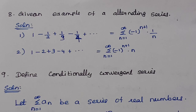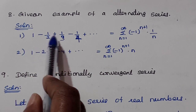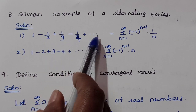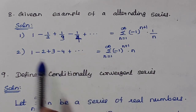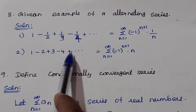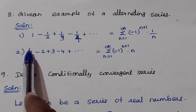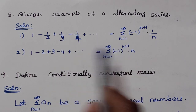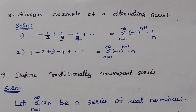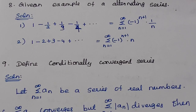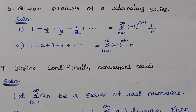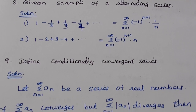Another alternating series example: Σ (−1)^(n+1) / 2^(n−1), giving 1 − 1/2 + 1/3 − 1/4 + … Also, 1 − 2 + 3 − 4 + … where the nth term is (−1)^(n+1) · n is another alternating series.